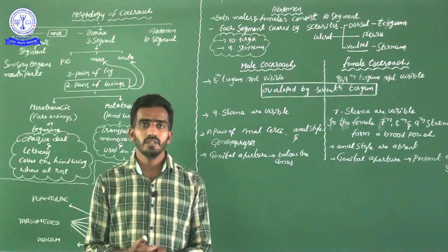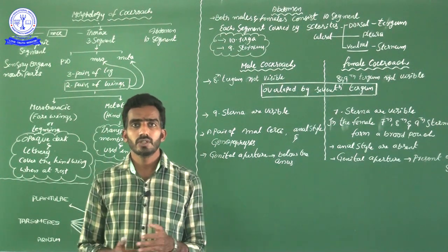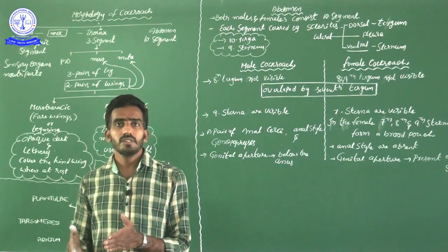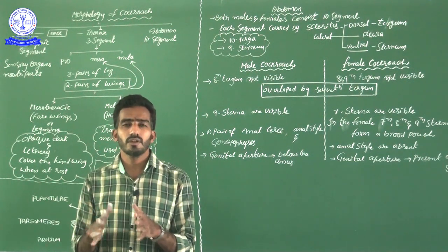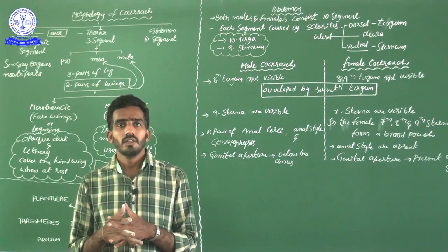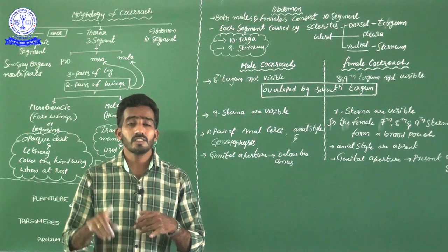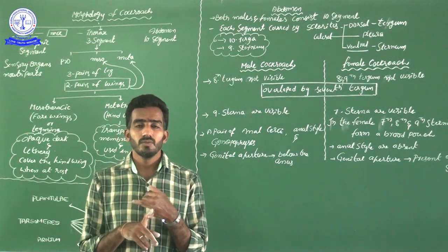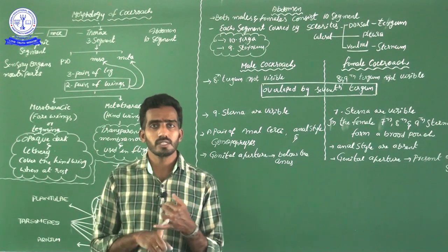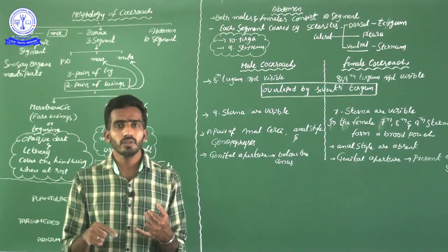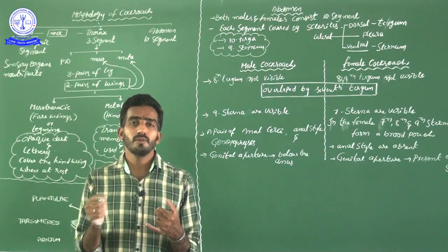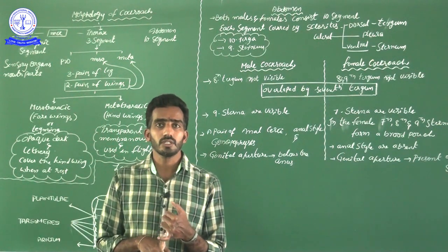Hi students, good afternoon to everyone. This is the third video regarding cockroach type study. In the cockroach study, previously we started about morphology of a cockroach — external morphology. Especially the head region and its parts — we completed that in the last video, including the mouth parts. In this video, we continue with a diagrammatic explanation of the mouth parts at the end.